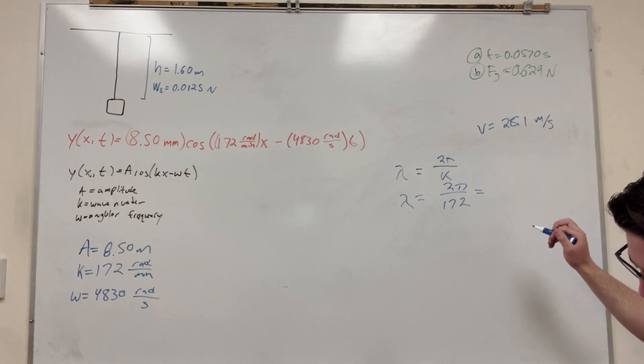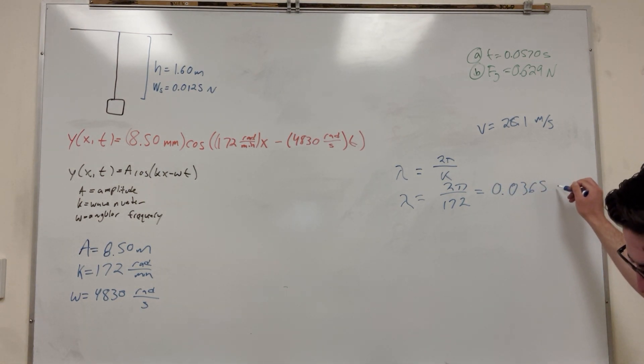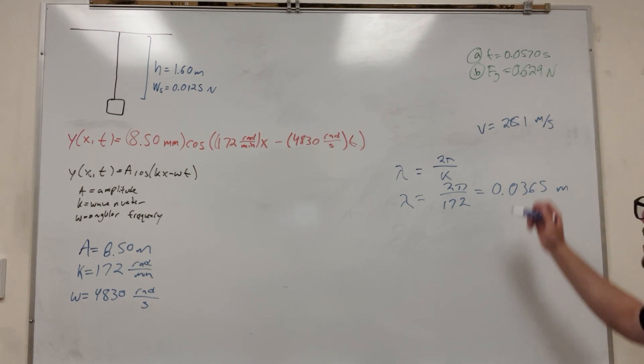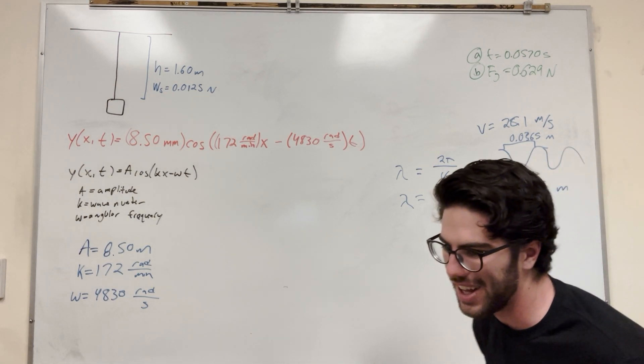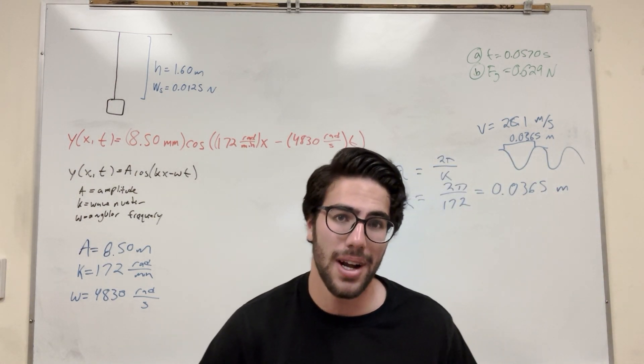So we can say that λ is equal to 2π over 172, and that number is 0.0365 meters. That's basically when the string is oscillating, that's the distance here, right? This is 0.0365 meters to cover one more wave. I'm totally off screen. Hey, what's up? Okay. So now we have its wavelength, but we need to know how many are on the string at a time, right?